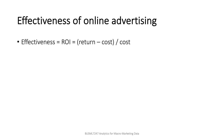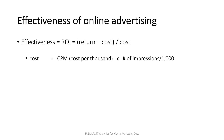ROI is given by the return from the ad campaign divided by the cost of the campaign. Usually, most online ad companies charge a flat rate on ads, and the industry standard unit of ads or impressions is 1,000.